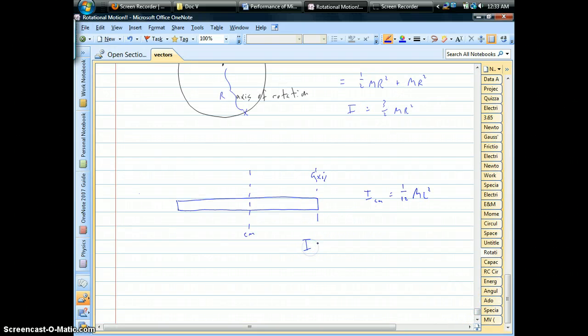Well, the parallel axis theorem says we don't have to set up the integral. We could just say we're going to take the moment of inertia around the center of mass, one-twelfth ml squared, and we're going to add on the mass of the stick times little d squared. Well, in this case, what would that be? That would be half the length of the stick squared.